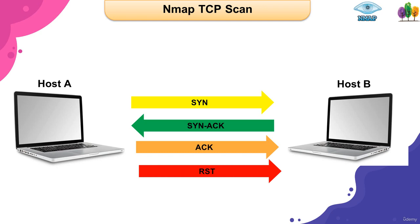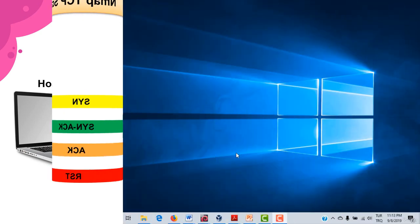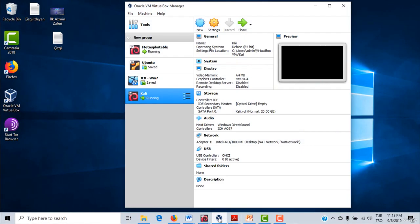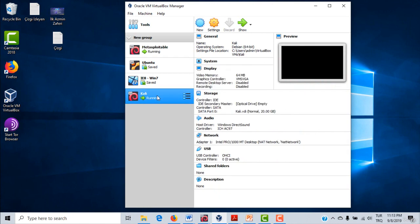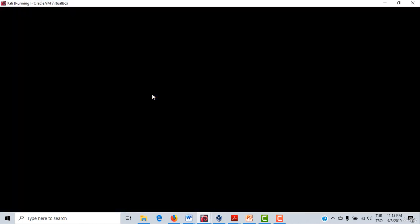To scan TCP with NMAP, we need to add the -sT parameter to the NMAP command. I'll give you an example — we'll scan the TCP top 20 ports on the Metasploitable server that we installed.